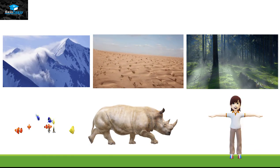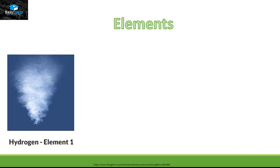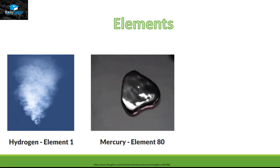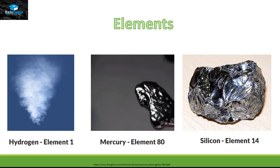Now all these things, whether living or non-living, are made up of elements. Some elements like to stay in the form of gas, like hydrogen. Some elements are stable in the liquid state, like mercury, and some elements like to stay in the solid state, like silicon.